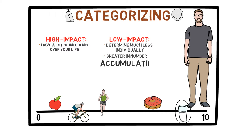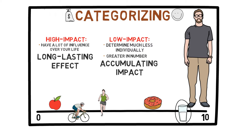On the other hand, there are some decisions or events that only occur once, but have a long-lasting effect on your goal of being healthy. These are high-impact decisions or events. For example, if I get into an accident and I am severely injured, that single incident severely impacts my health.